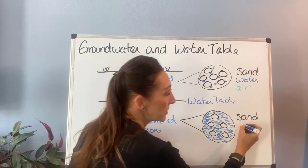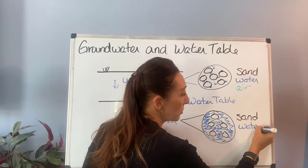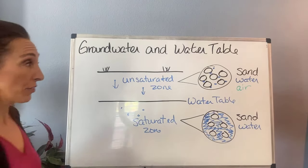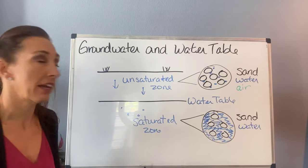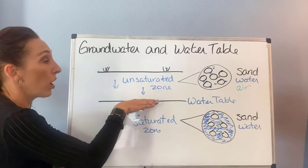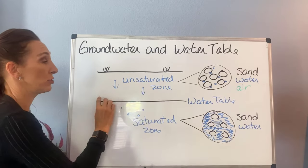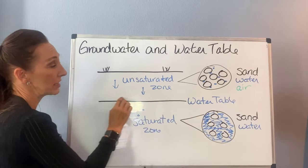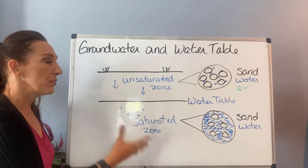Above the water table you have sand, water, and air. As these water droplets percolate down, the water table moves up because you're filling that air space with water. If we extract some water out, the water table moves down.